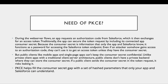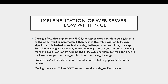PKCE helps fill this consumer secret gap with a set of hashed parameters that only your app and Salesforce can understand. During the flow that implements PKCE, the app firstly creates a random string which we call the code verifier parameter. It then hashes this value with the SHA256 algorithm - this hashed value is the code challenge parameter. During the authorization request we pass the code challenge parameter, and during the access token POST request we pass the code verifier parameter.